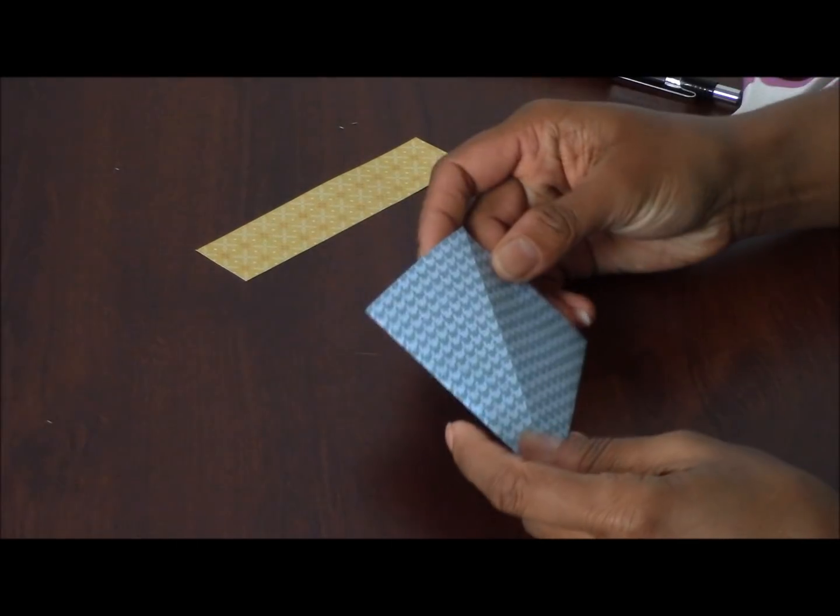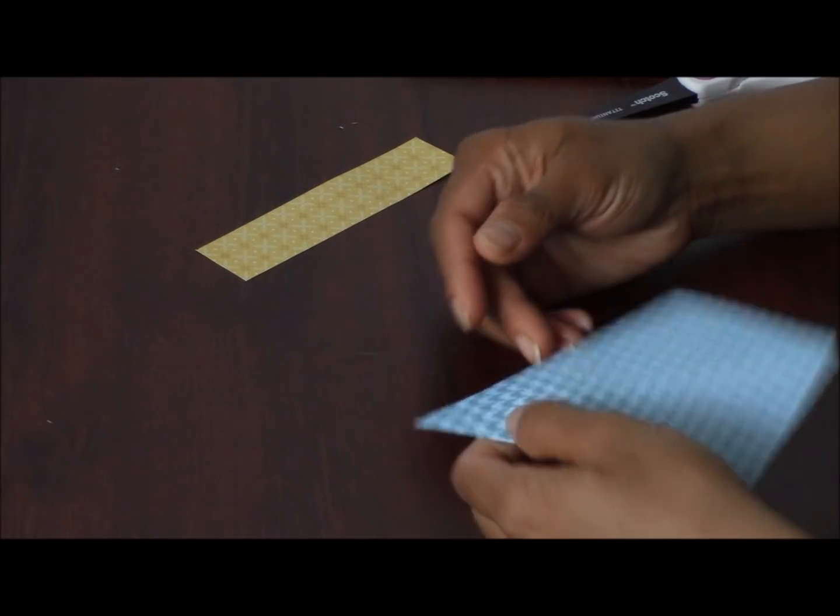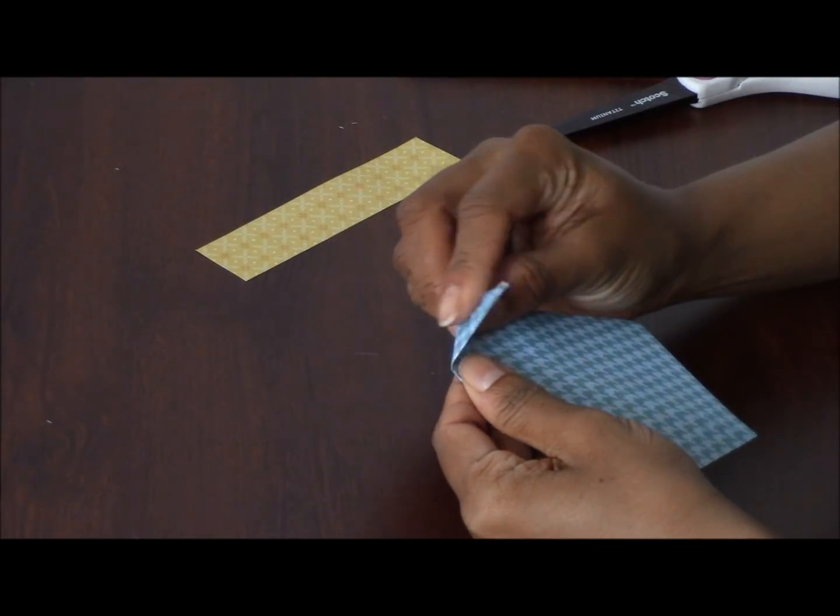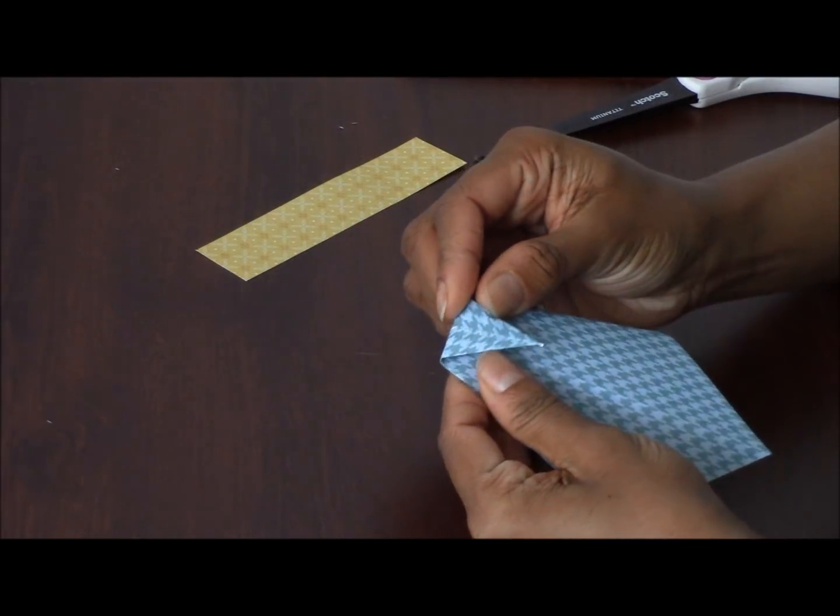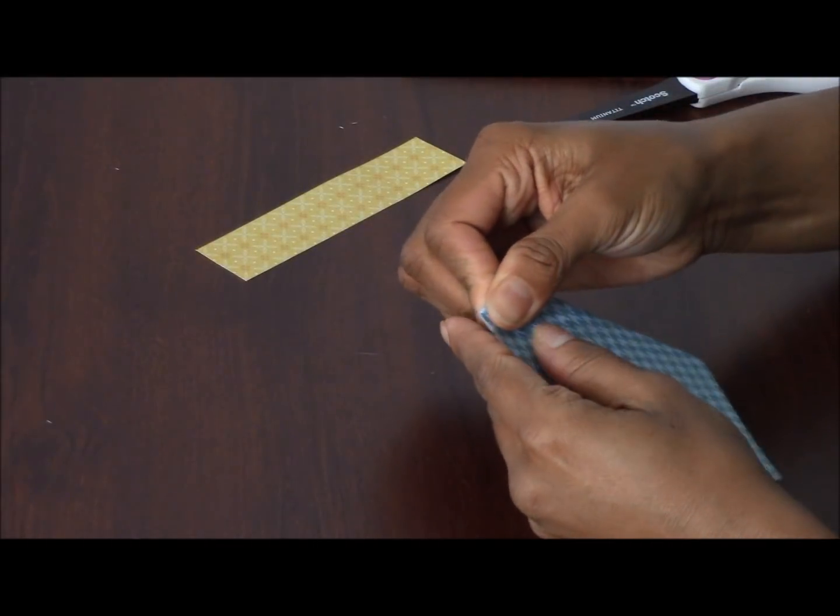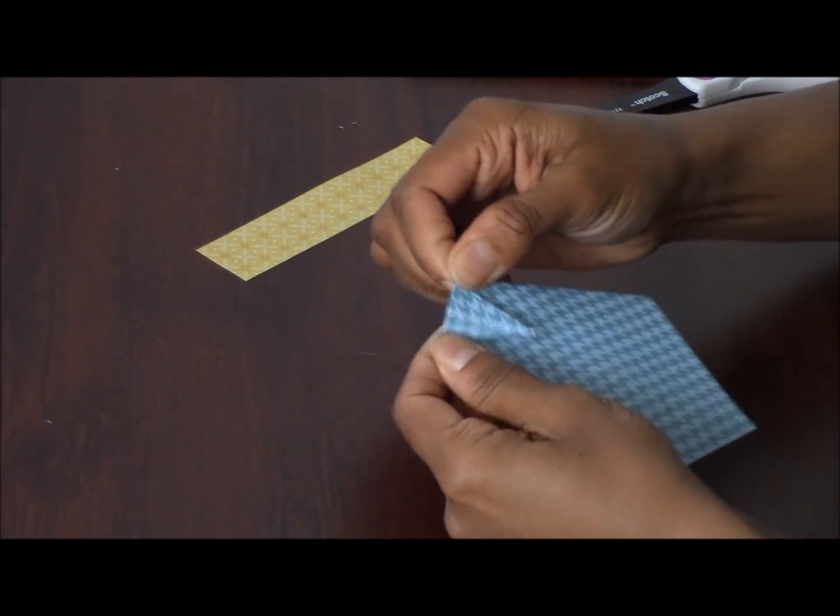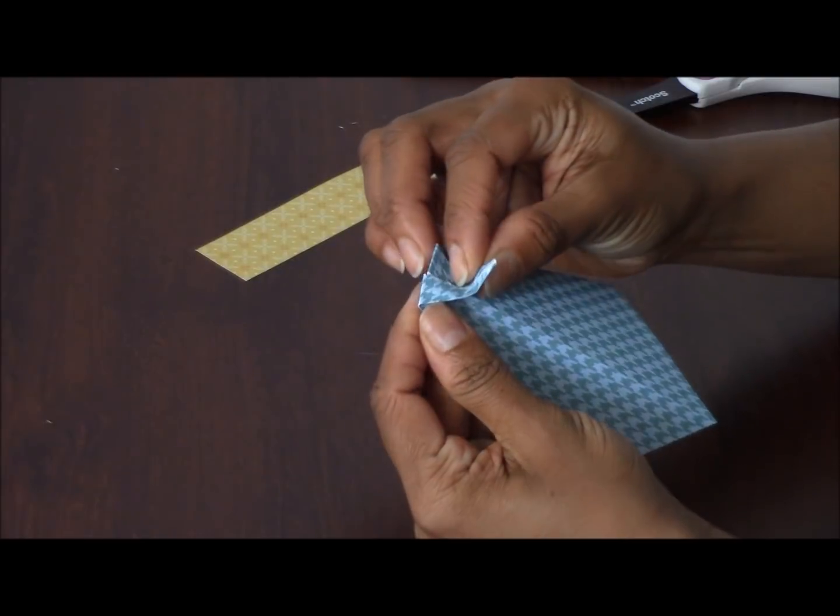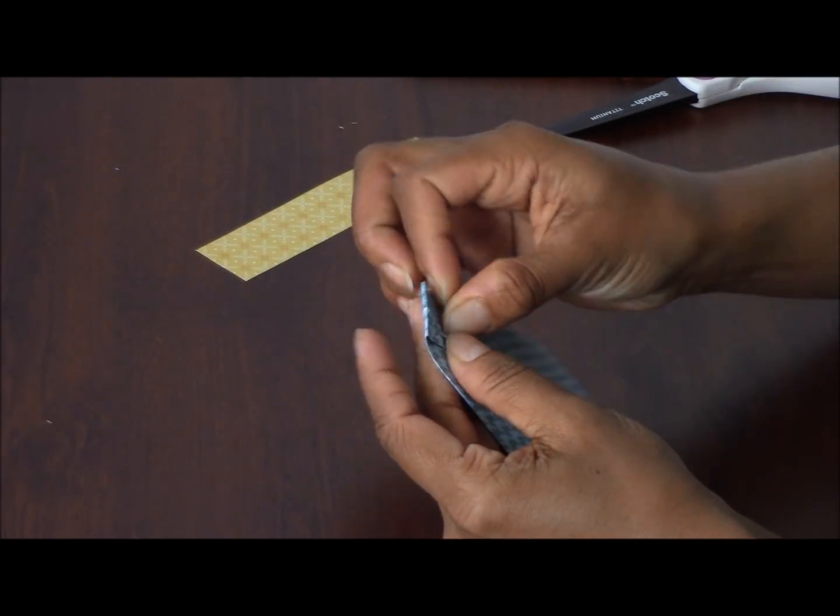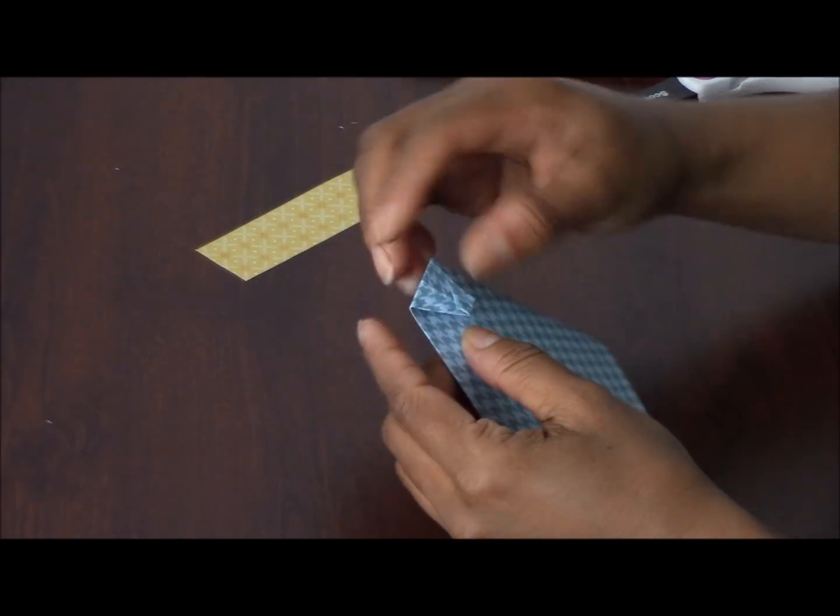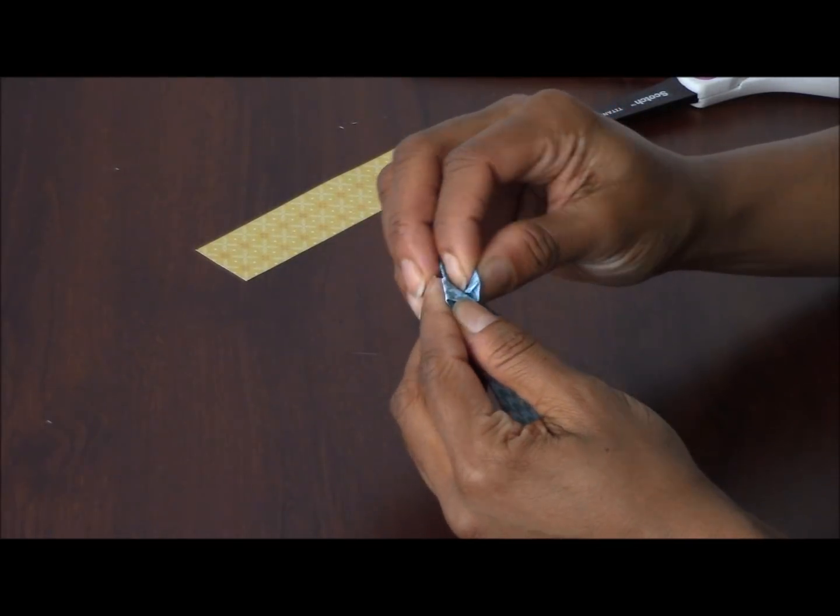Now flip it and let's work on the other side. Bring the pointed edge down a bit, say about an inch. You don't have to be precise with this. Then fold it up in half and fold it up again, just a tiny bit higher.